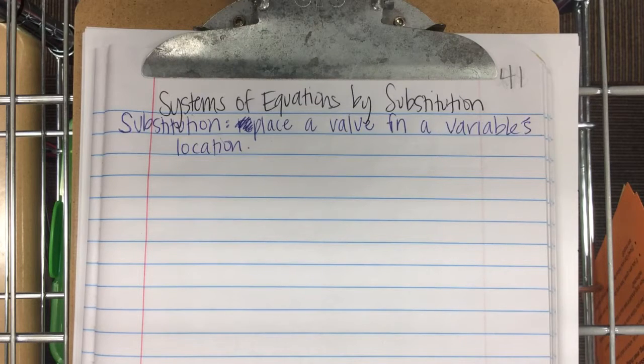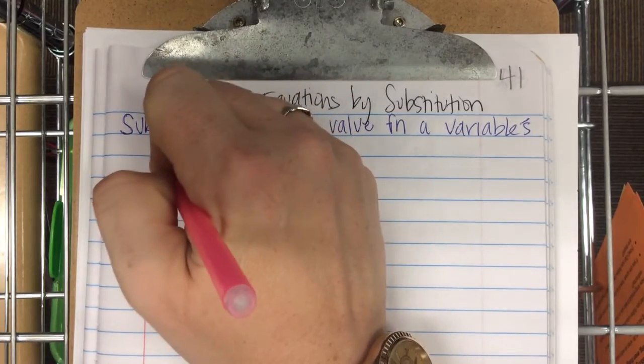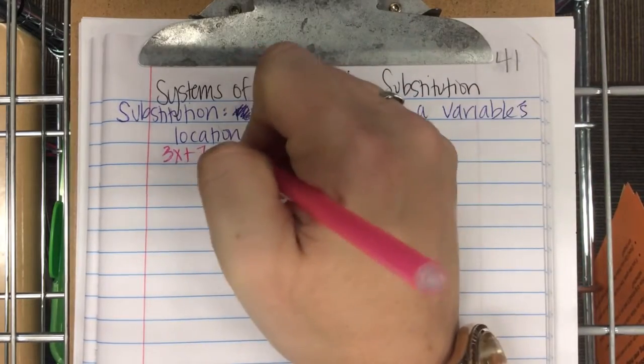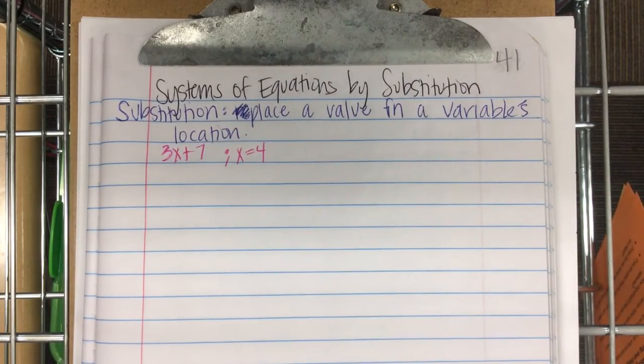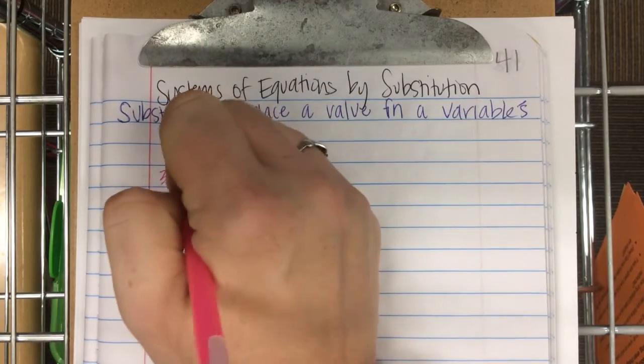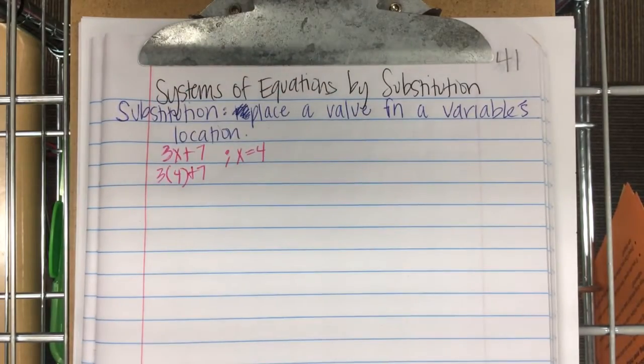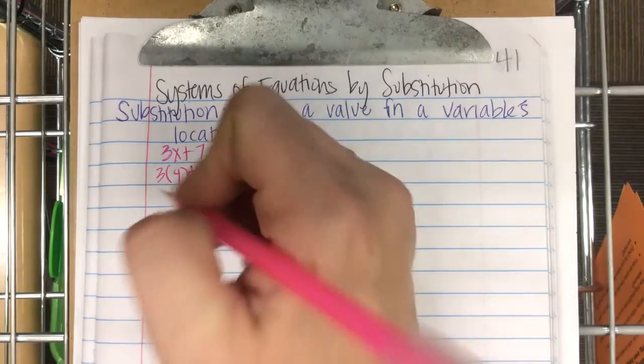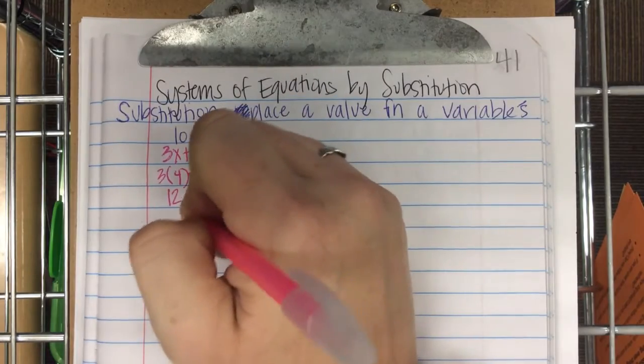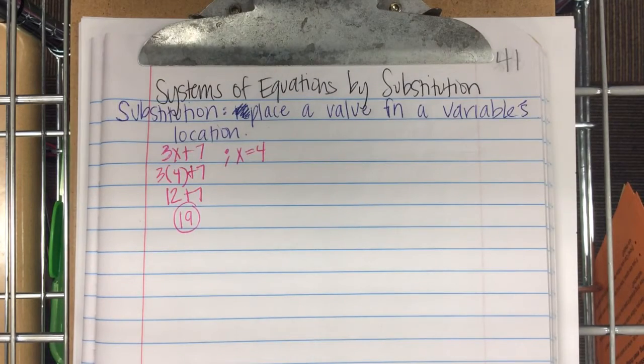So, let's start easy. If you have a problem that says 3x plus 7, and they tell you that x equals 4, can you do this problem? Yeah. I mean, this is elementary school where we started doing this. 3 times 4 plus 7. So, it's 12 plus 7. So, it's 19. Pretty easy.